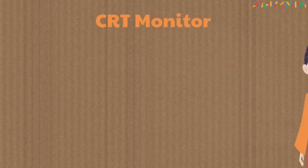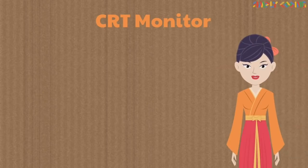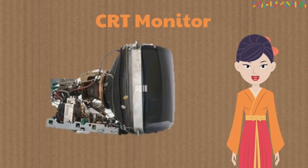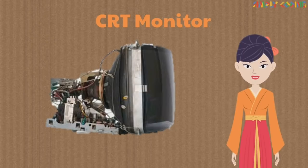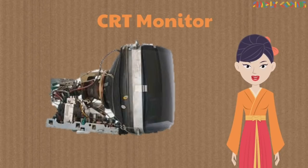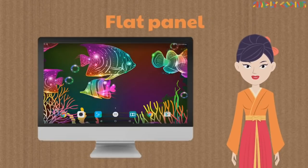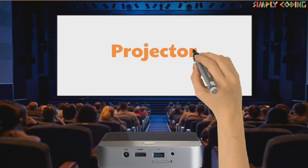There are different types of monitors. Earlier, the cathode ray monitor or CRT monitor was used. The screen is coated with a chemical called phosphor, and an electron gun fires electrons on these dots which glow to give colors. They were very large in size and consumed a lot of power.